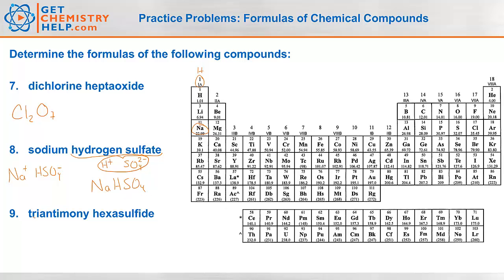Triantimony hexasulfide. 'Tri' means 3 antimonies — antimony is Sb — so Sb₃. 'Hexa' means 6 sulfurs, so S₆. The formula is Sb₃S₆. I hope you enjoyed this video on determining formulas for chemical compounds. Visit us at GetChemistryHelp.com where we have many more videos on naming all kinds of chemical compounds. We'll see you next time.